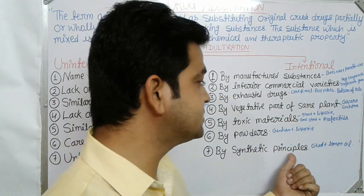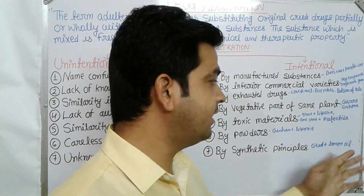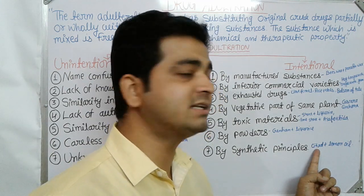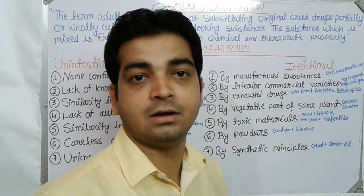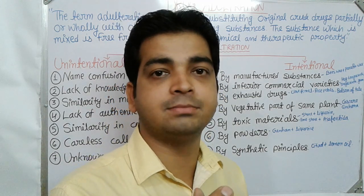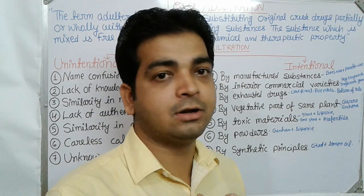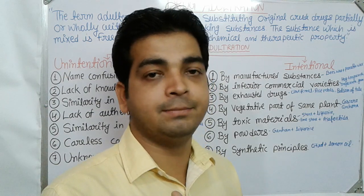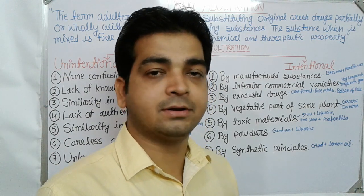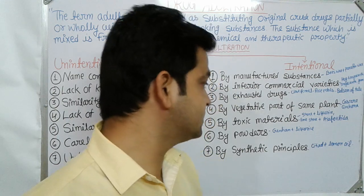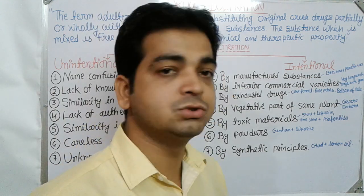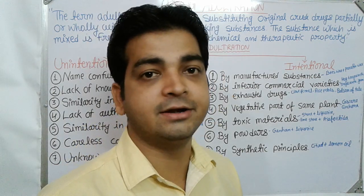The seventh type is adulteration by synthetic principles. For example, in lemon oil, citral is used as an adulterant because the fragrance of lemon oil is due to citral. So after extracting the natural oil, synthetic citral can be added as an adulterant. So here we have seen the different types of adulteration and the hi-fi techniques being adopted for adulteration, making it very difficult to trace out.